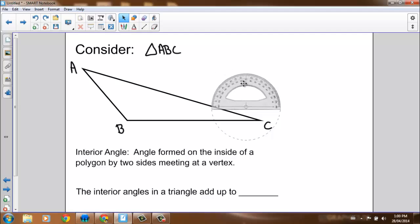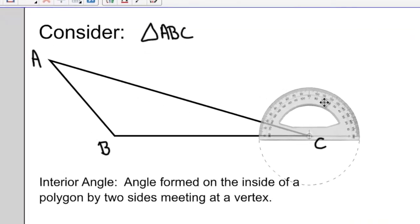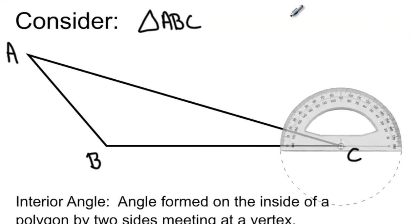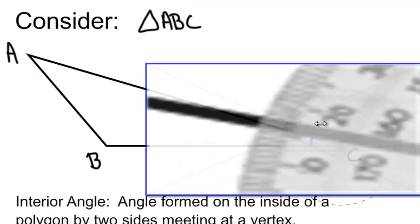And as you do that, you can follow along with me as I measure the interior angles in my triangle. So using the protractor, I'll start with angle C. So I'm measuring angle C, and it looks like angle C is about 16 degrees.